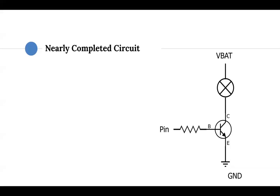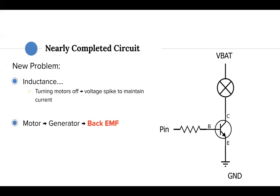So this is a nearly completed circuit, but what are we missing? We have a new problem when we run electric motors: inductance. Turning the motors off results in a voltage spike to maintain current. When you're in a car and you take your foot off the gas pedal, it doesn't mean that the car will stop immediately. Rather, the car will keep on rolling and then come to a stop. Similarly, when you stop passing in electric power to the electric motors, it doesn't mean that the micromouse will stop immediately. Rather, it will keep on moving a bit more forward, thus rotating the motor shaft, until it then comes to a stop.